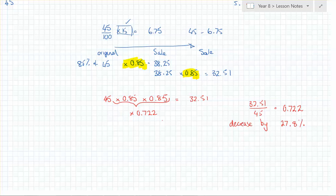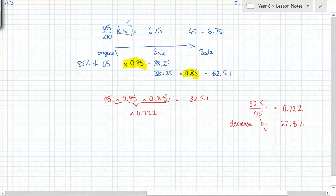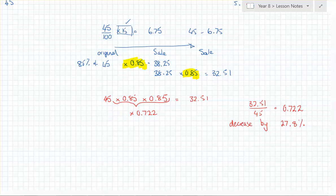A student asks: since we know 38.25 is 85%, can we multiply that by 15 to get further? But the goal is to skip computing 38.25 entirely. This also helps with reverse percentages: to reverse the combined decrease, you divide by 0.7225, rather than trying to work backwards through two separate steps.